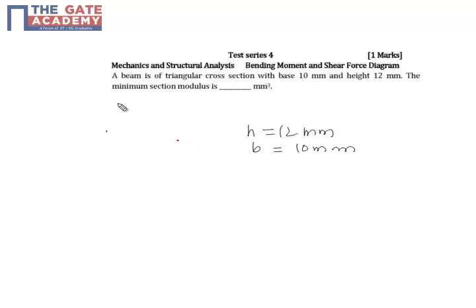Let us draw the cross-section of the beam. Let us assume this x-x being the location of the neutral axis, and assume that this distance is y1 and this distance is y2.